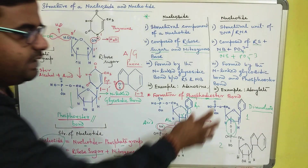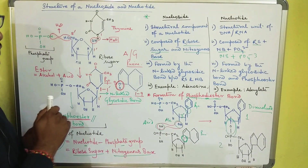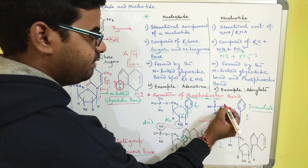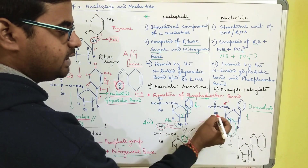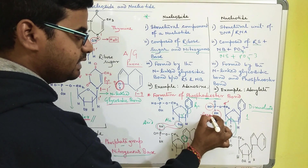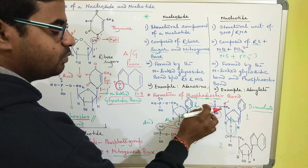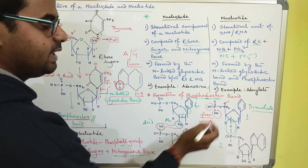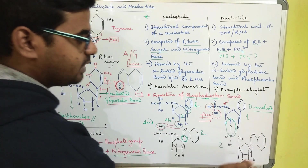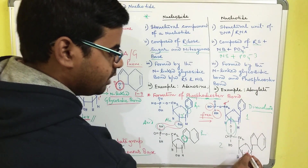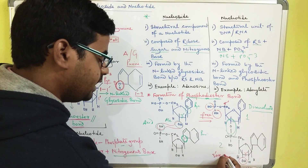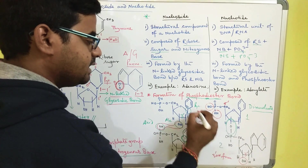One important thing to remember when a phosphodiester bond is formed: the first nucleotide has the five prime carbon with its two OH groups free — the OH group attached to the phosphoric acid remains free. At the other end, the last nucleotide of the polynucleotide chain has its three prime OH group free.